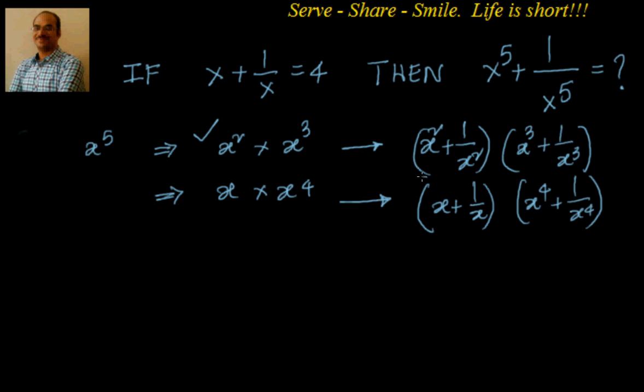That means I have to find out what is the value of x square plus 1 by x square and x cube plus 1 by x cube. Now, what is x square plus 1 by x square? We know that a square plus b square is equal to a plus b whole square minus 2ab.